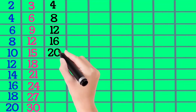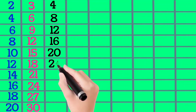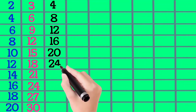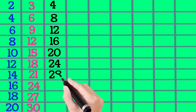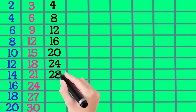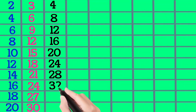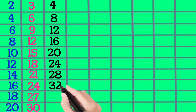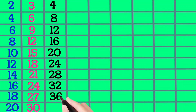4×6 is 24, 4×7 is 28, 4×8 is 32, 4×9 is 36, 4×10 is 40.